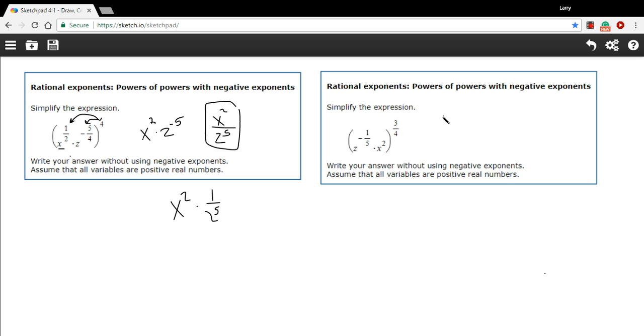Over here, it's a little more complicated because we're raising something to a fractional power, but the process is still the same. We're going to multiply the exponents. So we're going to multiply the 3 fourths by the negative 1 fifth here, and we're going to multiply the 3 fourths by the 2. So 3 fourths times a negative 1 fifth is going to be negative, well, 3 times 1 is 3, and 4 times 5 is 20. So our power for z here is negative 3 20ths.